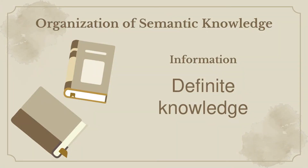Next is information. Information is a definite knowledge. The information superhighway of the internet is an incredibly rich source of information on virtually all aspects and disciplines. However, information is not always knowledge. Information does not become knowledge unless we think critically about it. Information is transmitted to us through teaching, reading literature or media, or through the use of our senses. Data becomes information when meaning is added.